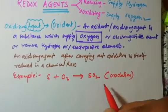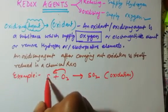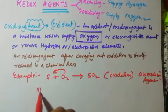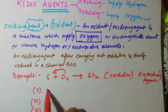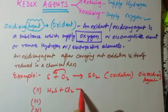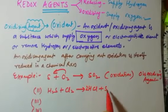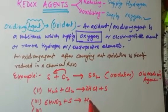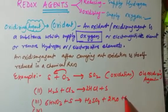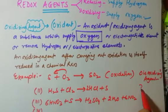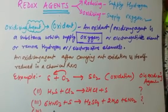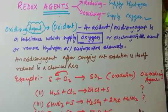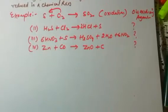Now here are some practice examples — identify the oxidizing agent: (1) H₂S + Cl₂; (2) 6HNO₃ + sulfur → H₂SO₄ + 2H₂O + 6NO₂; (3) Zinc + CO → ZnO + C. You have to identify what the oxidizing agent is in each reaction and send your answers.